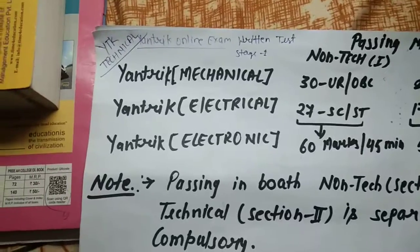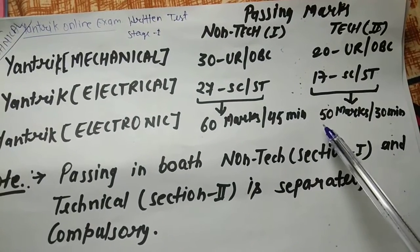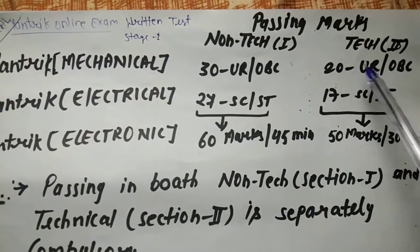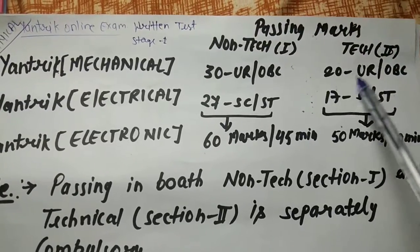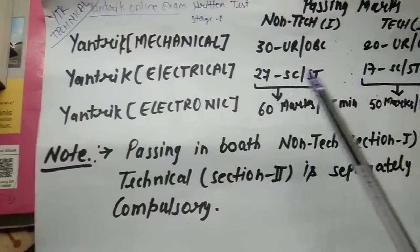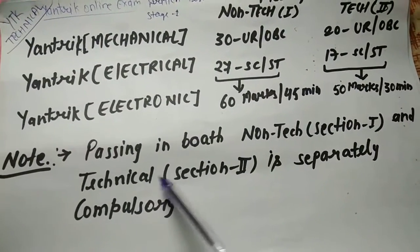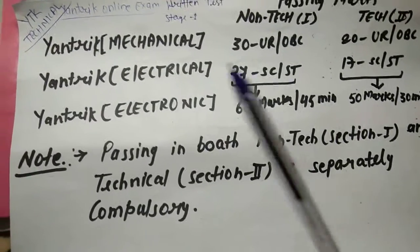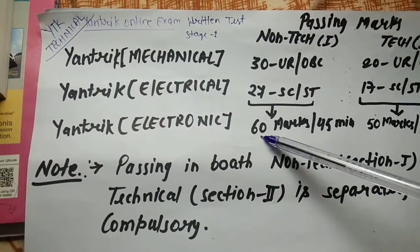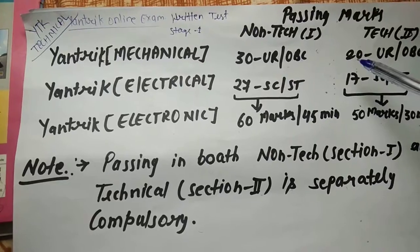Part 2 is Technical: You'll get 50 questions, each question is 1 mark, and 30 minutes time. General and OBC need 20 marks to qualify, SC and ST need 17 marks. Important note: Passing in both Non-Tech Section 1 and Technical Section 2 is separately compulsory.